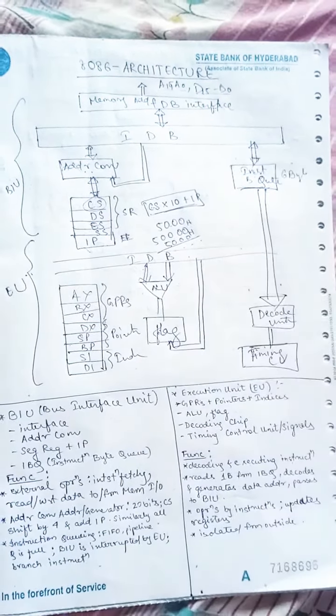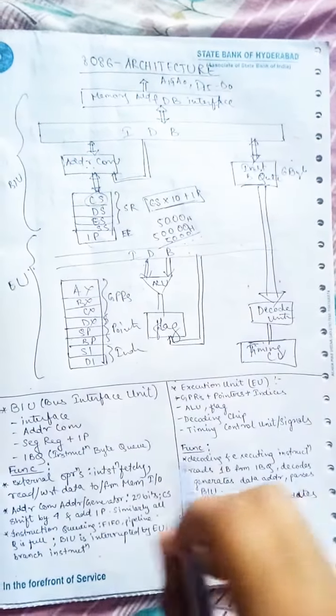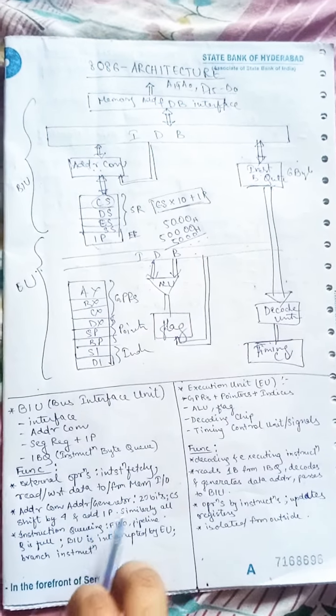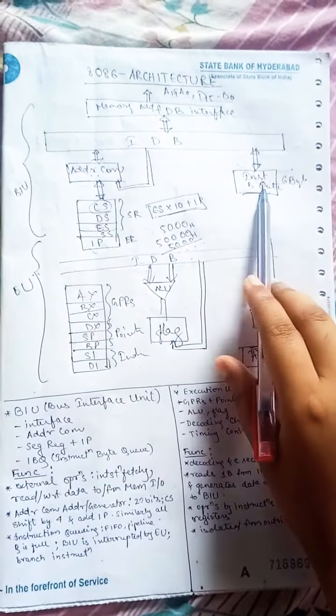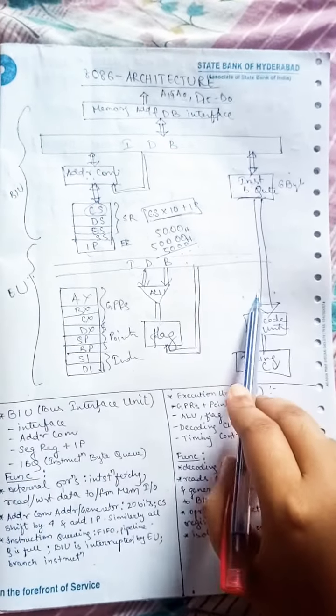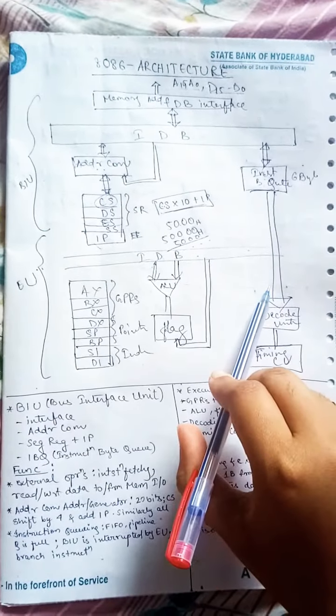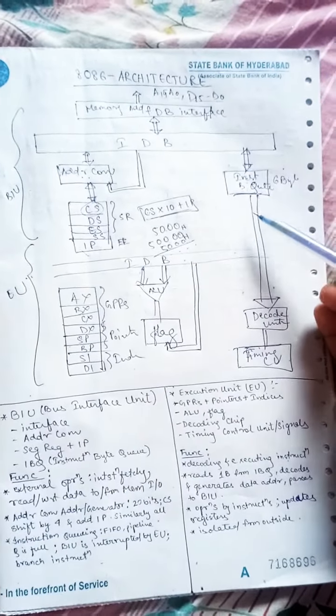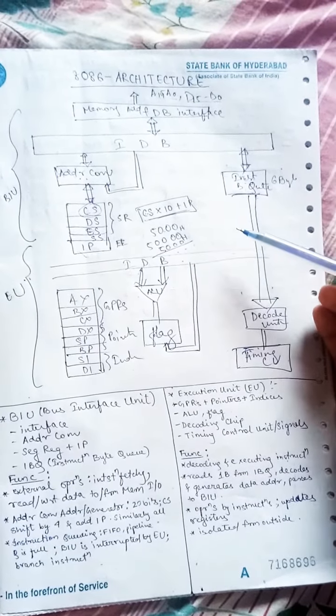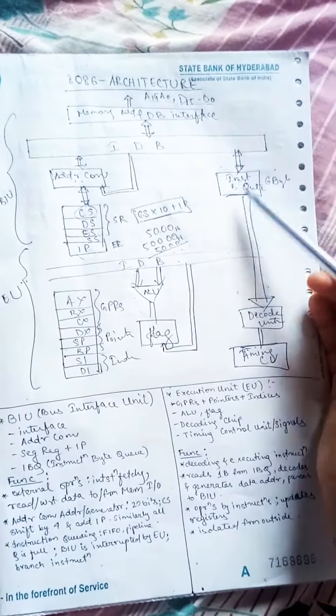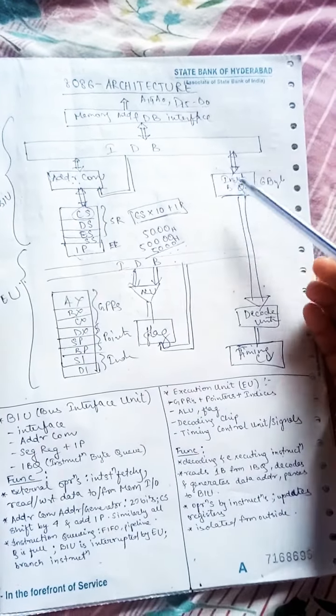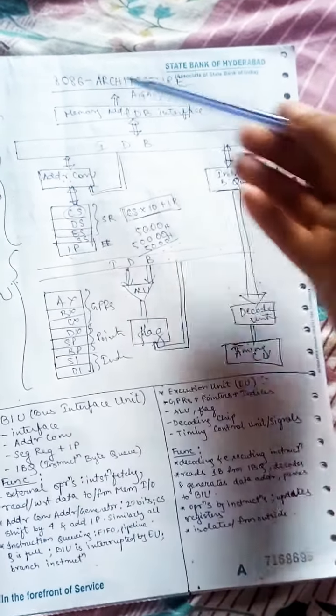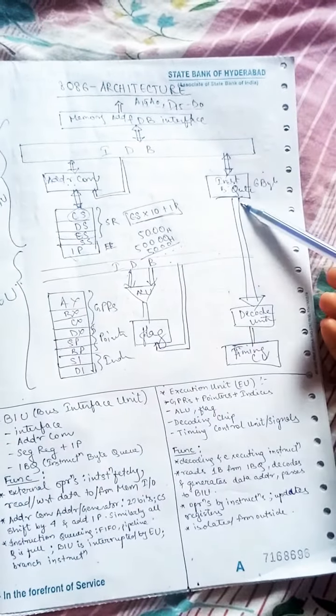Then instruction queuing. It is a FIFO, that is first in first out FIFO based queue, so that it will speed up the program execution. How? We will fetch the instructions, we will keep it here, and then from here it will execute while executing. It can again fetch the instruction simultaneously.